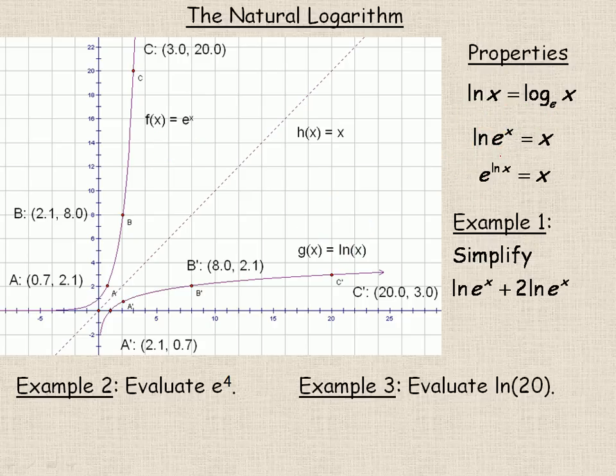So, the ln of e to the x equals x. Another property of logarithms is if you have a raised to the power of the logarithm base a of x, that is equal to x. So, if we transfer that over to ln's, e raised to the power of ln x is just equal to x. Because again, this is logarithm base e.